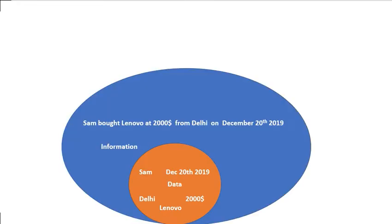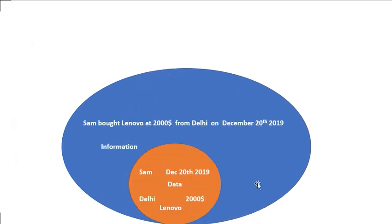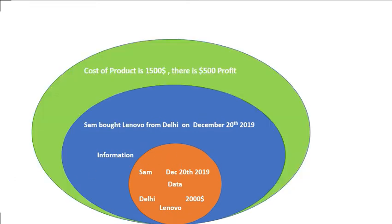Once we combine these isolated facts and connect them, it becomes information. So we can find that Sam purchased a Lenovo laptop for two thousand dollars from Delhi on December 28, 2019 — now it becomes meaningful information.